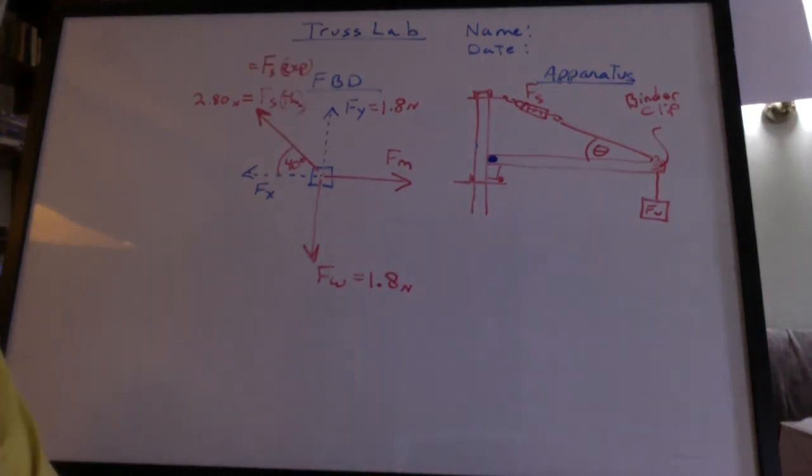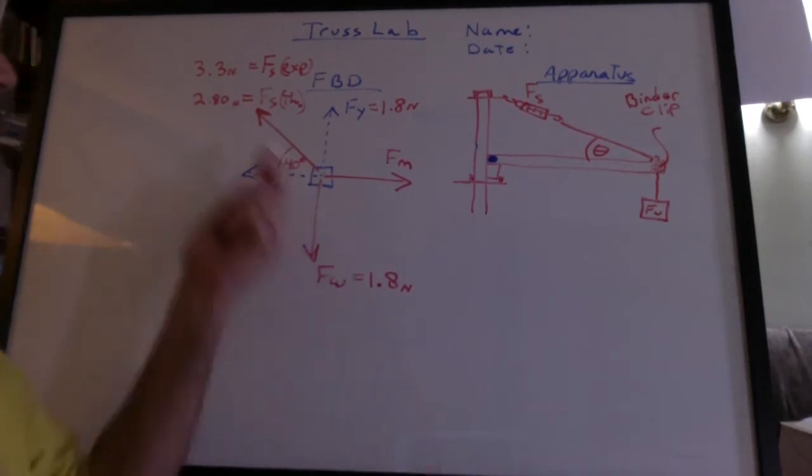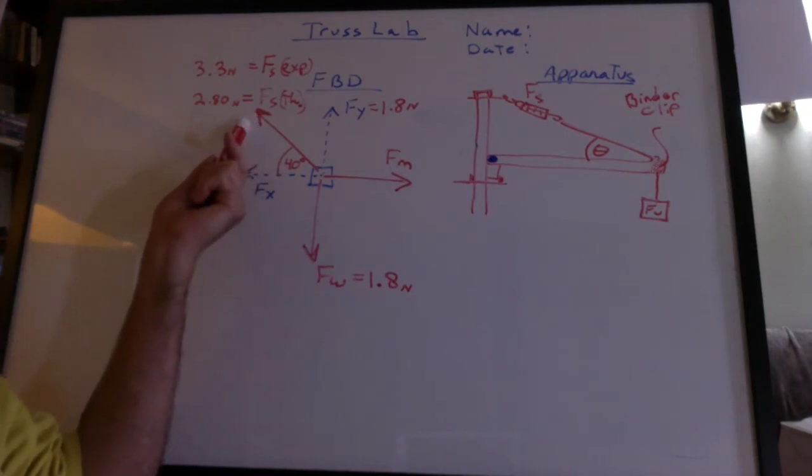Now we can go look at the spring scale and get the experimental value. I'd get about 3.3 newtons. Now we went through everybody's data in class and found out that all of these theoretical values were coming in lower than the experimental.